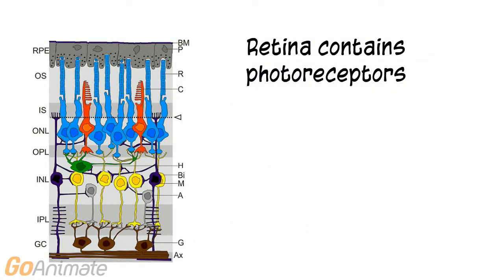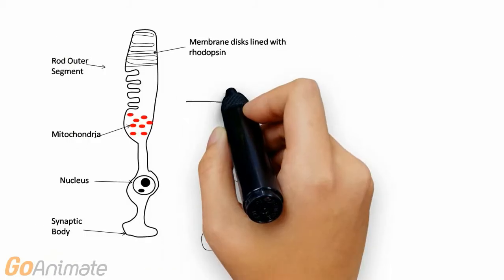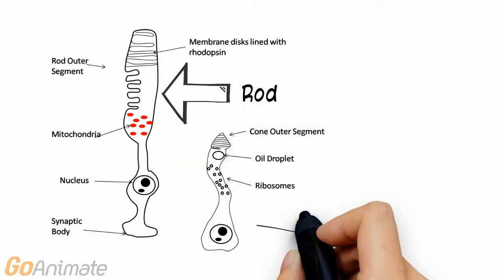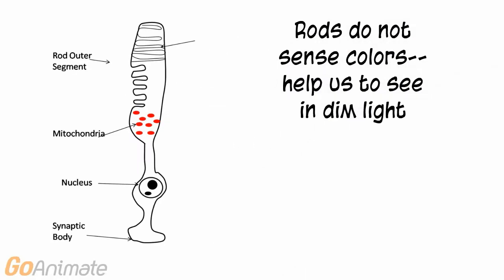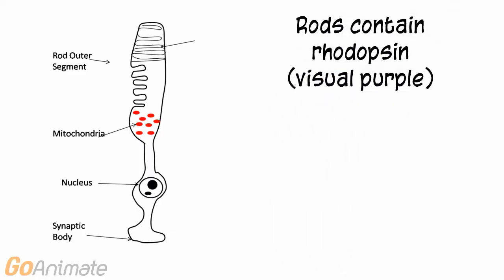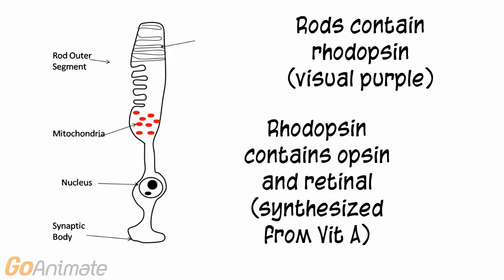The retina contains photoreceptors that respond to light. There are two types of photoreceptors: rods and cones. Rods do not sense colors, so they help us to see in dimly lit conditions. Rods contain rhodopsin, or visual purple. Rhodopsin contains opsin, a protein, and retinol, which is synthesized from vitamin A.